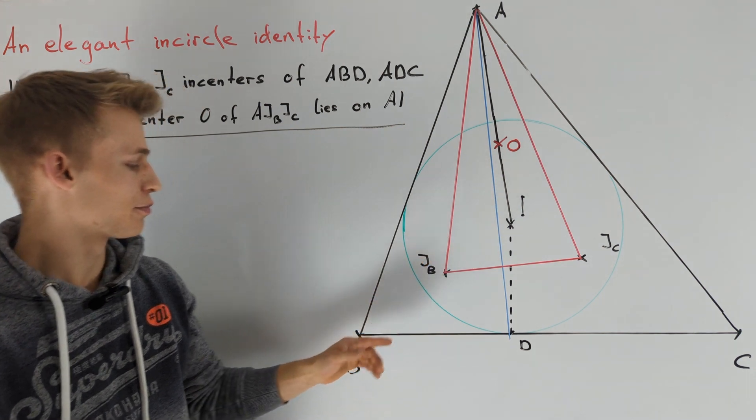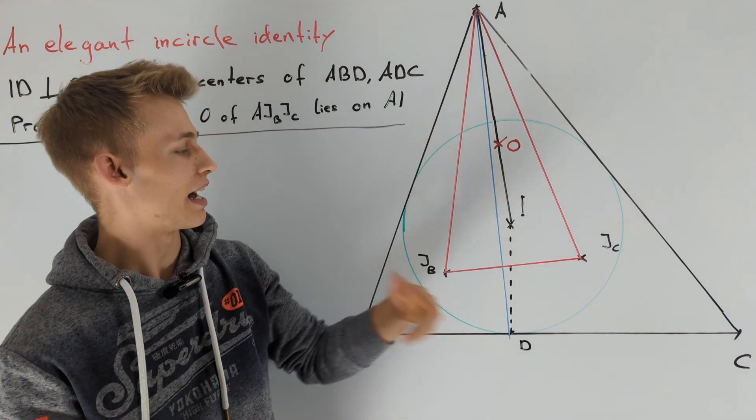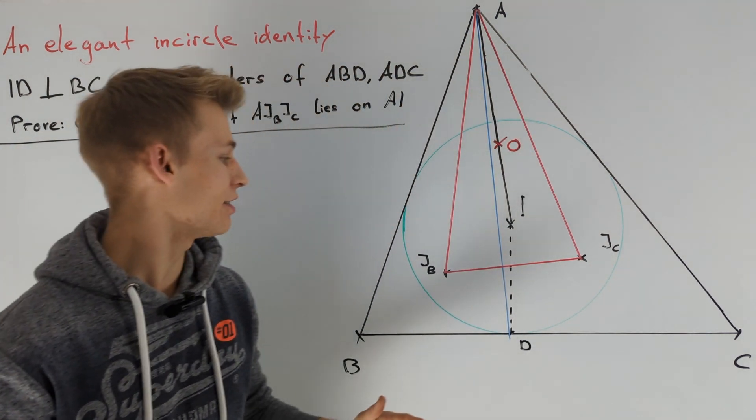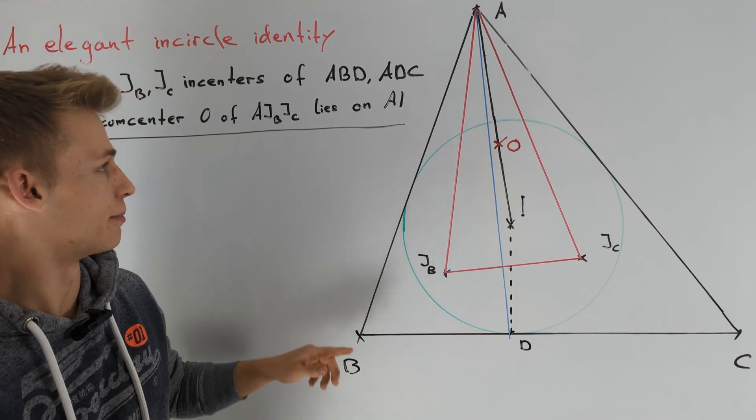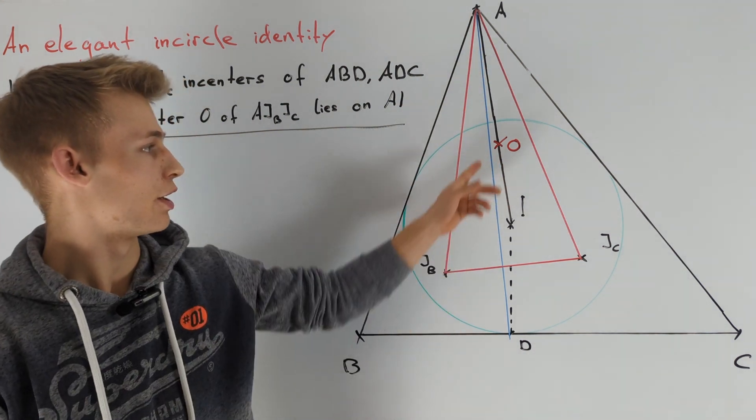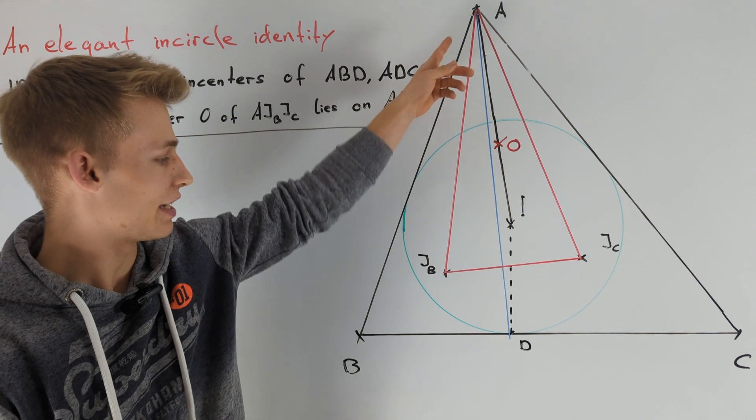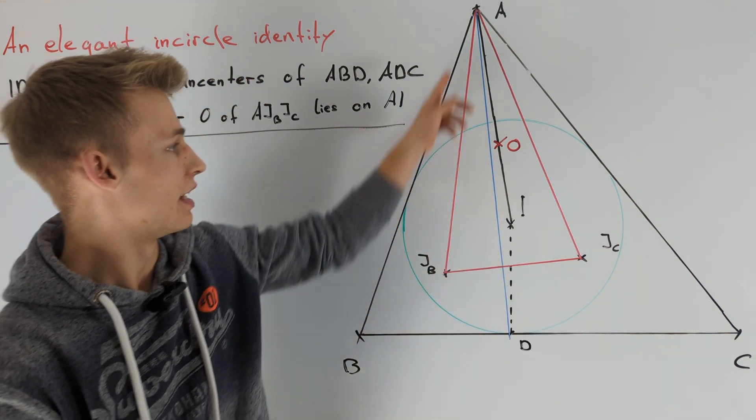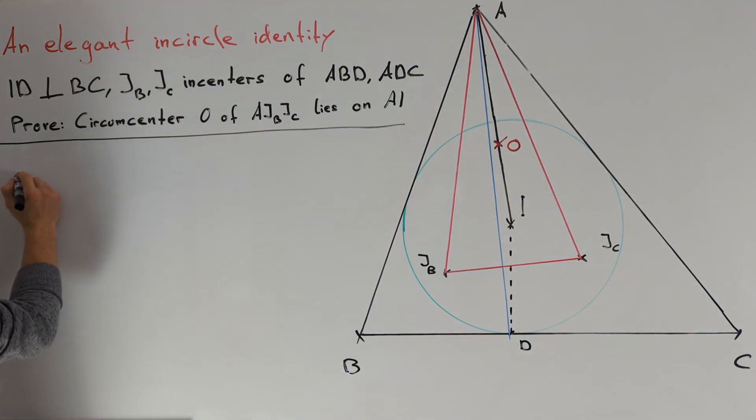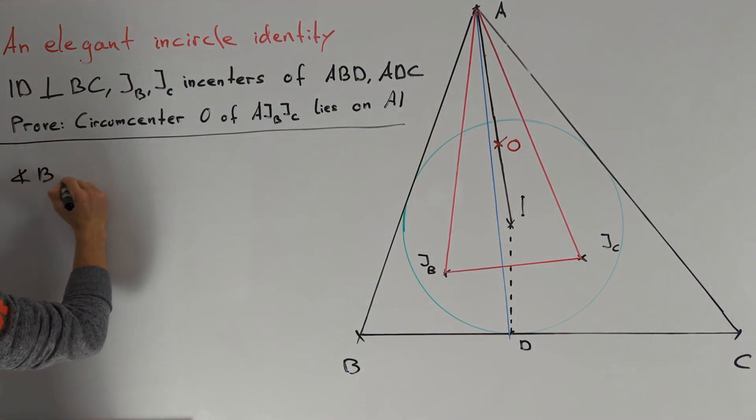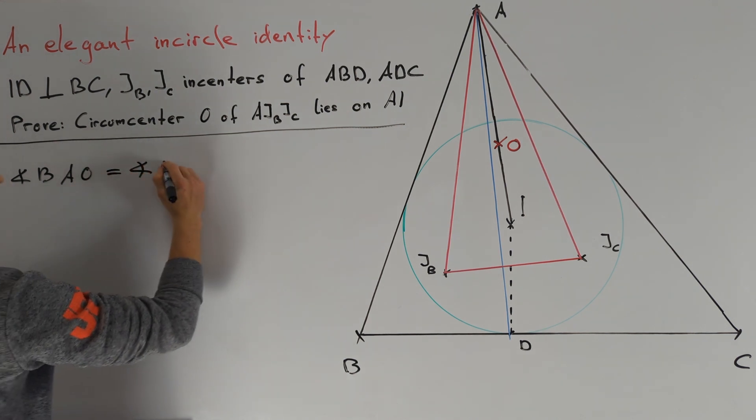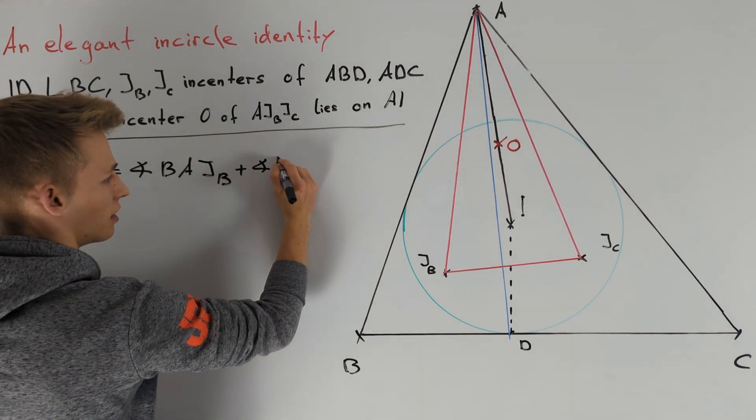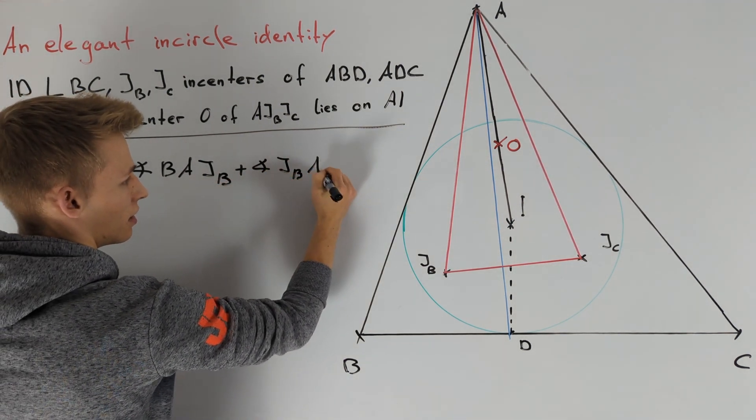This means proving angle BAO is half of angle BAC. We should figure out as much as possible about angle BAO. Since O is the circumcenter of triangle AJBJC, we can say something about angle JBAO. So we split angle BAO into angle BAJB plus angle JBAO.